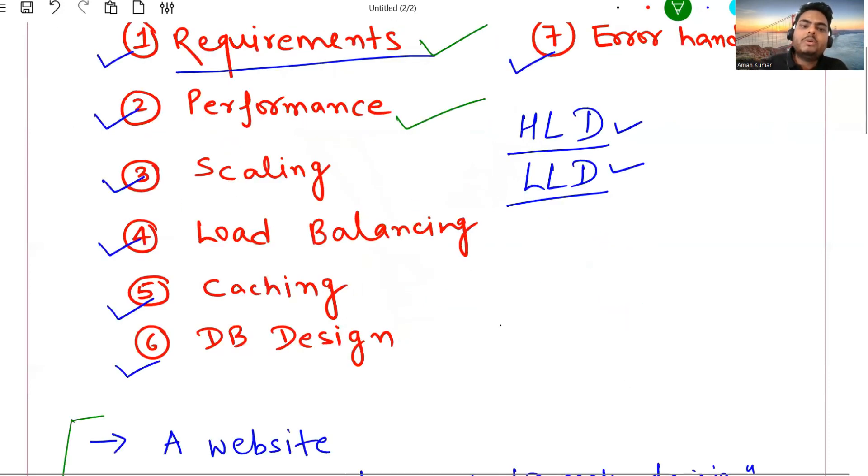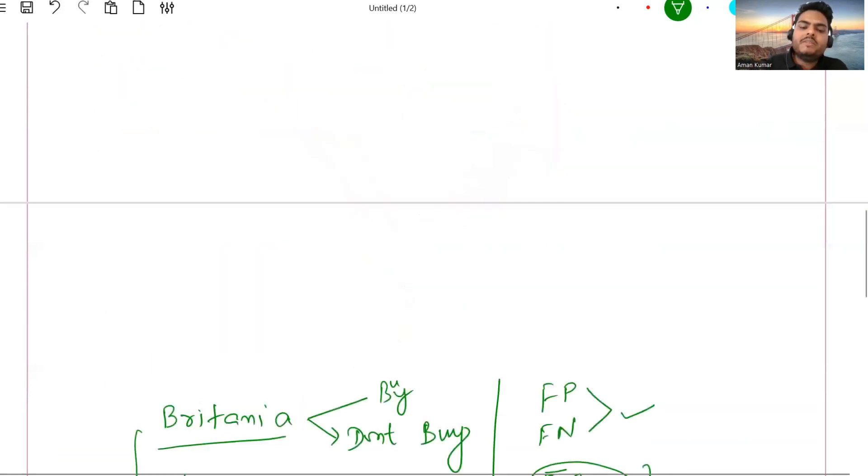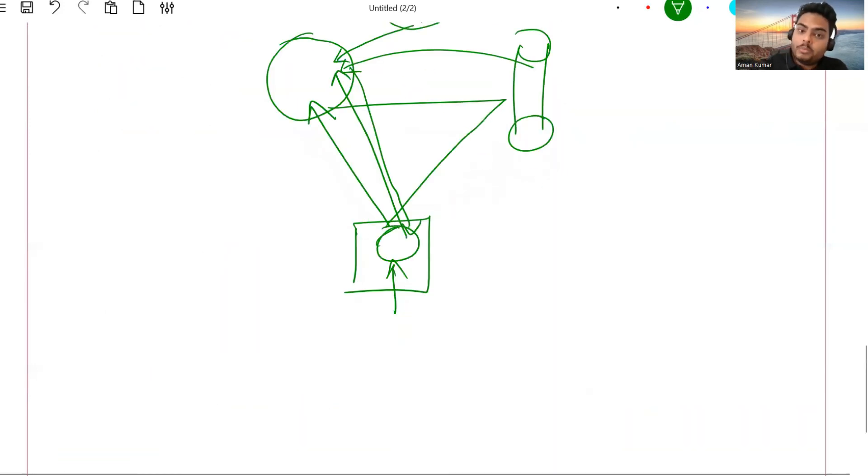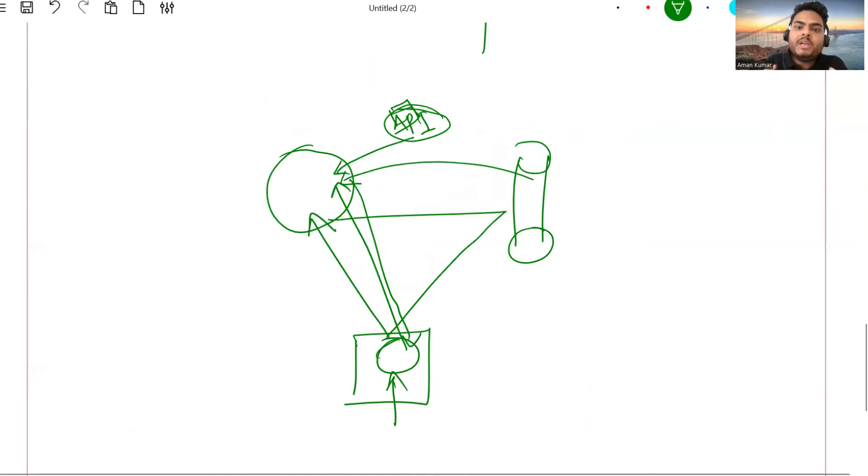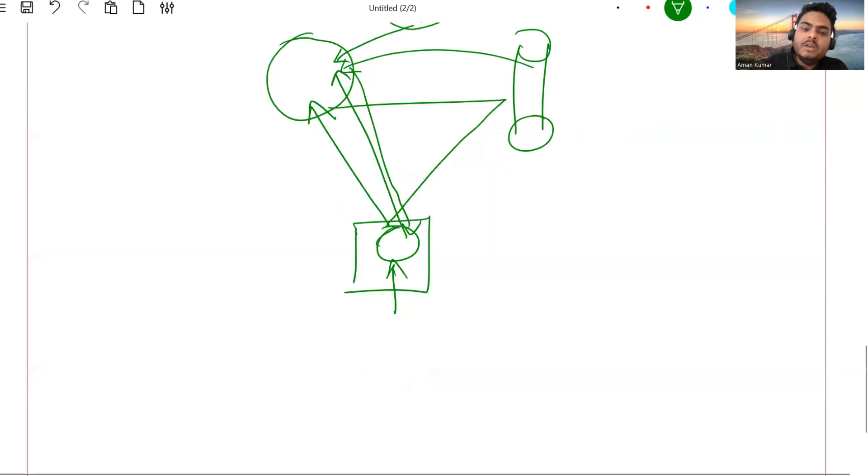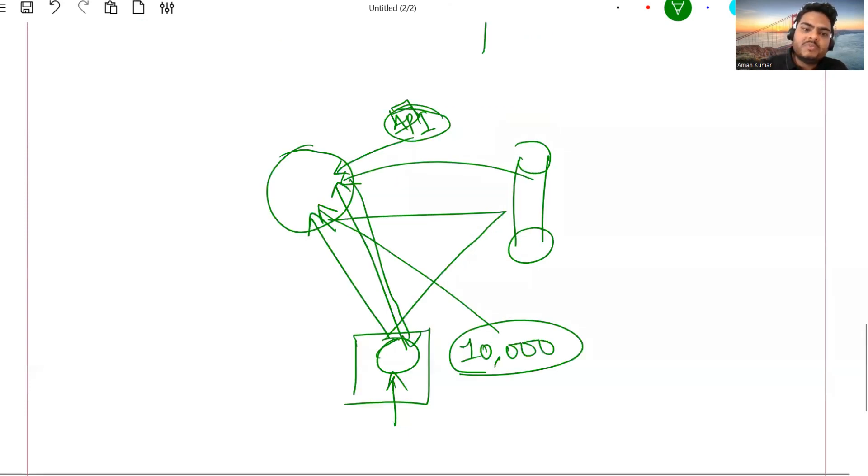Let's come to the third point. Third point is about your scaling. So as I told, there will be off peak and on peak. So on peak can be when the market is open. When the market is open, the number of users may be 10,000 every second. So when the number of users are 10,000, then you can say to interviewer that I will increase the capacity of my server for on peak hours. Now to increase the capacity of your server, there is a concept of scaling.